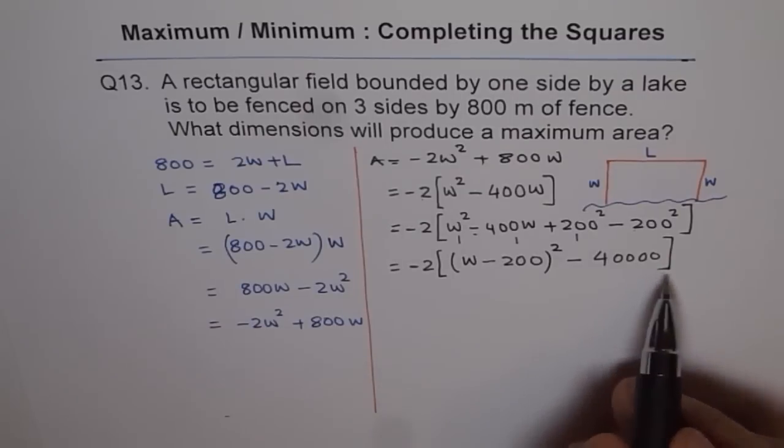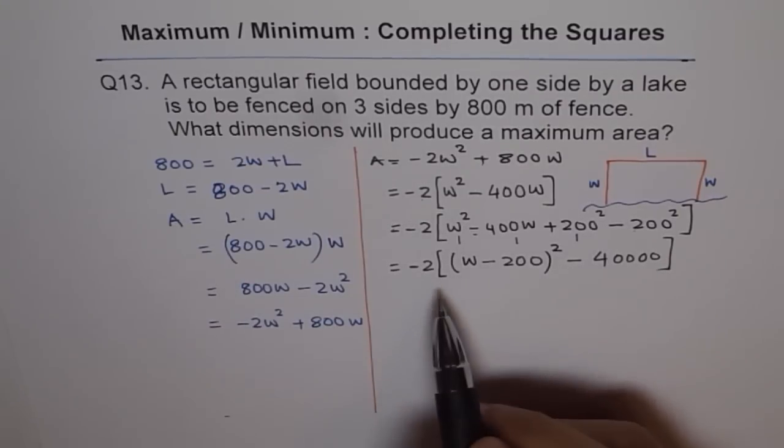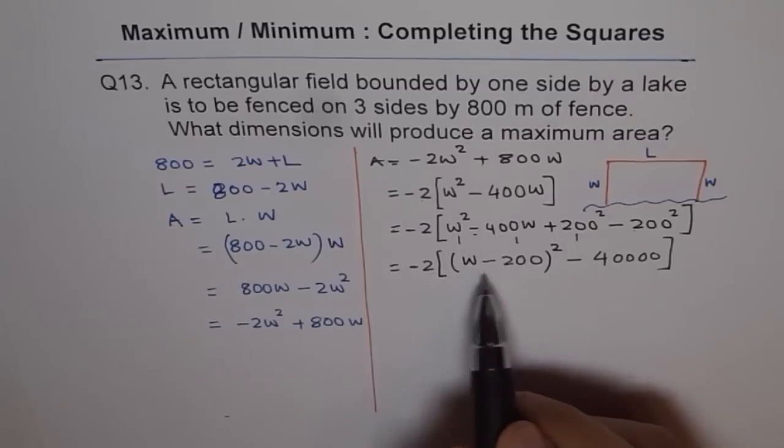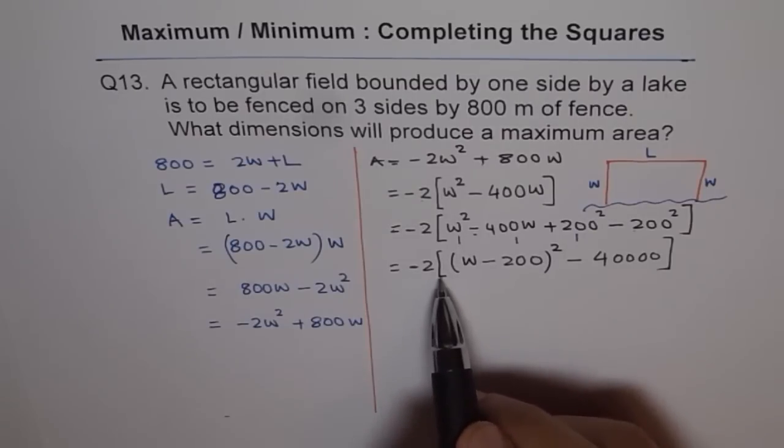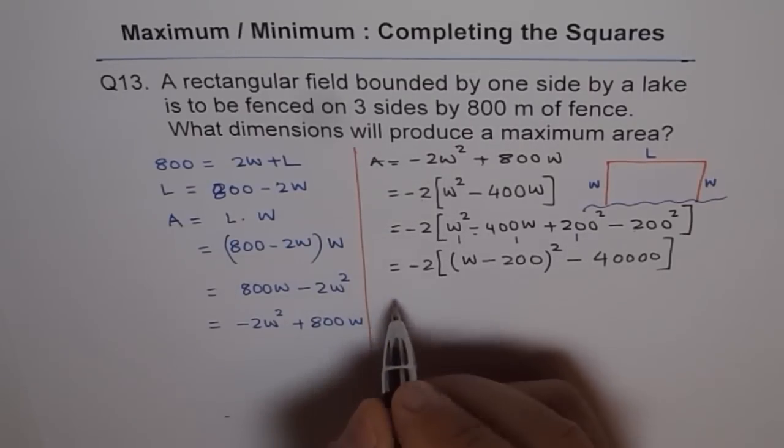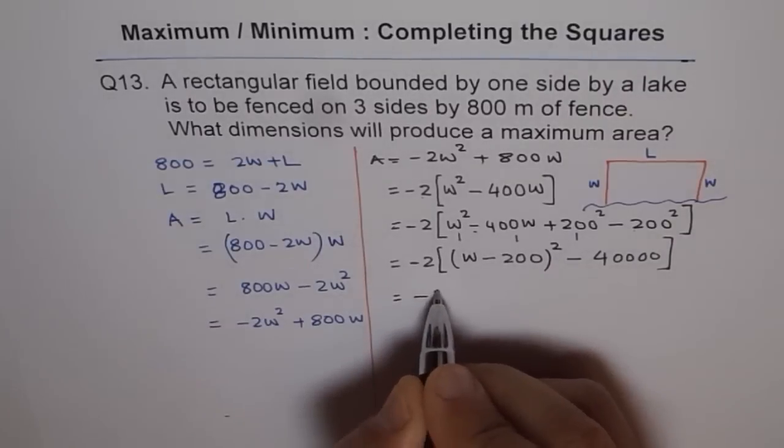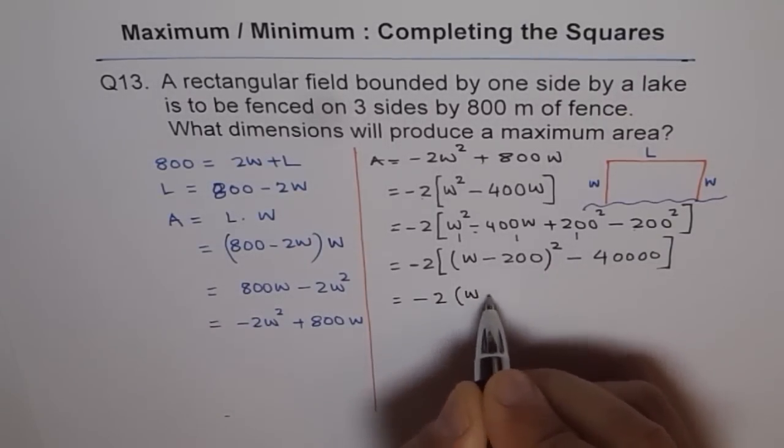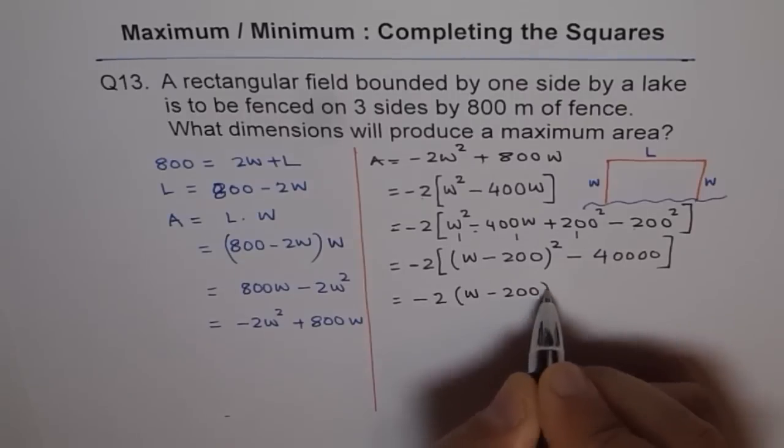To write the equation vertex form, let's open this bracket. You'll appreciate square brackets and a different bracket here. So that is the use of using square brackets. Let's open the bracket and we get minus 2, W minus 200 whole square.